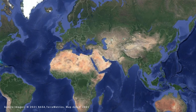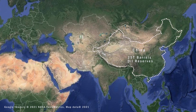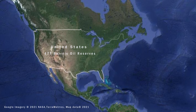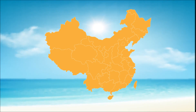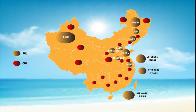China holds 25 trillion barrels of proven oil reserves, ranking 13th in the world and accounting for about 1.4% of the world's total. The US holds 47 trillion barrels of proven oil reserves, ranking 10th. China is one of the leading mining countries in the world and is the top producer of phosphates, vanadium, tungsten, antimony, graphite, coal, tin, molybdenum, lead, zinc, and gold.